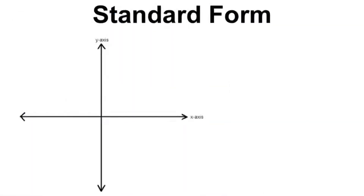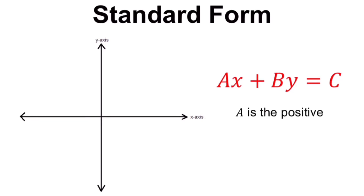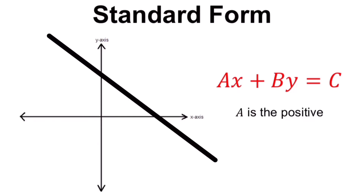Standard form has the formula ax + by = c, where a should always be positive. This standard form is generally used to determine the x and y intercepts of a line. If we have a line, it touches a point on the y-axis and a point on the x-axis, and we can determine the coordinates of these two points using standard form.